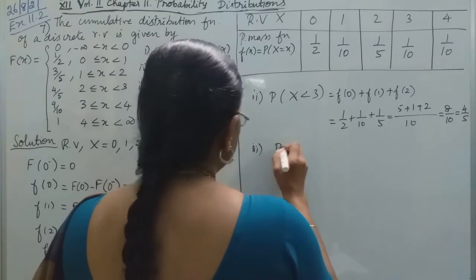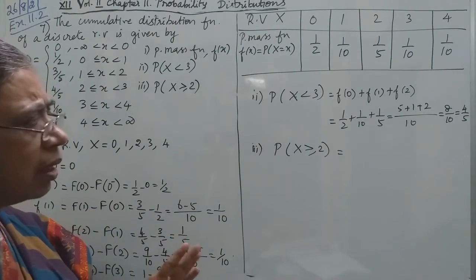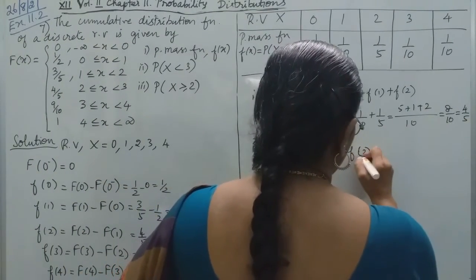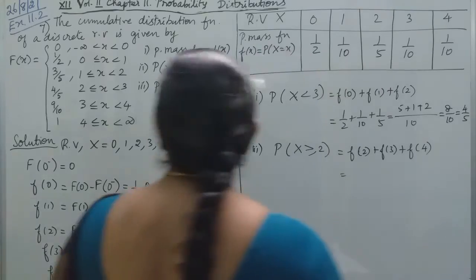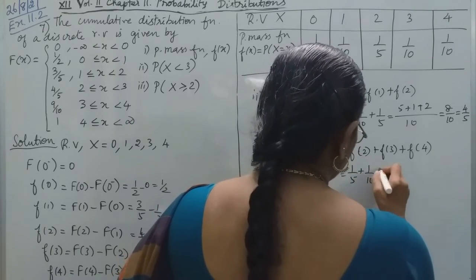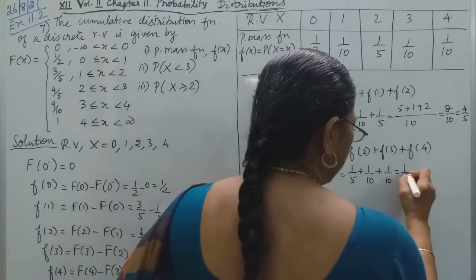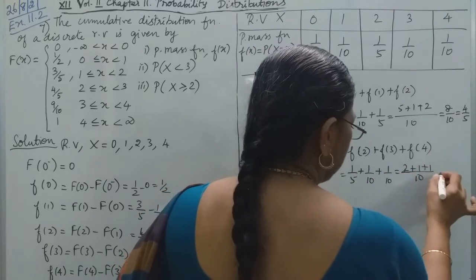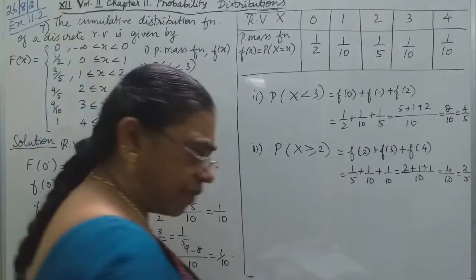And the third one is probability that X is greater than or equal to 2. So both 2 and above, that's f(2) plus f(3) plus f(4). So f(2) plus f(3) plus f(4) is 1/5 plus 1/10 plus 1/10, which is 2 plus 1 plus 1, equals 4/10 or 2/5.